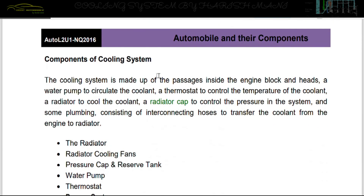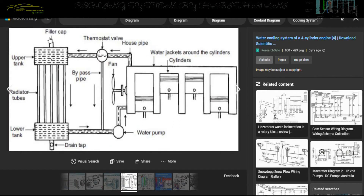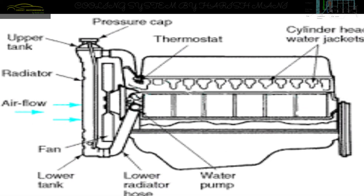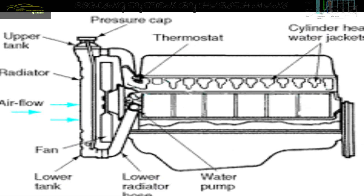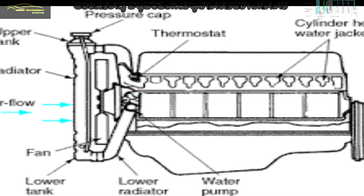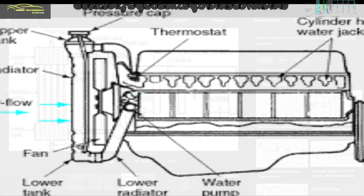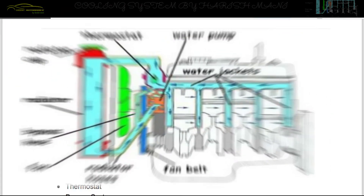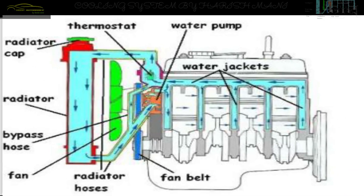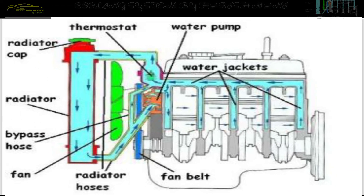Next are the main components of the cooling system. These include: a tank, a radiator, a fan, a thermostat, hose pipes, a water pump, and water jackets. These are the main components of the cooling system.